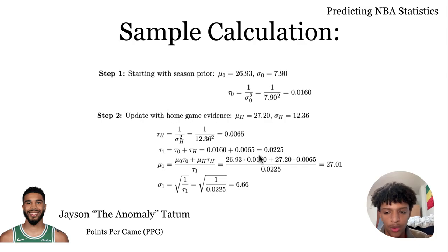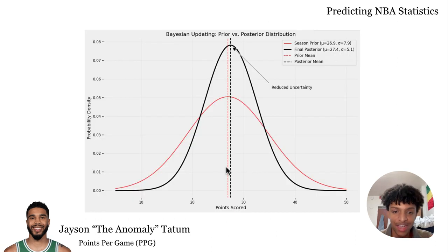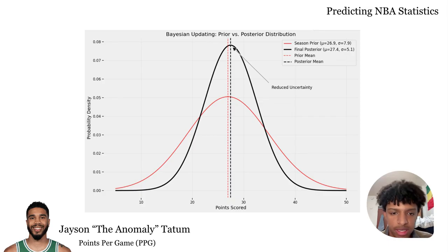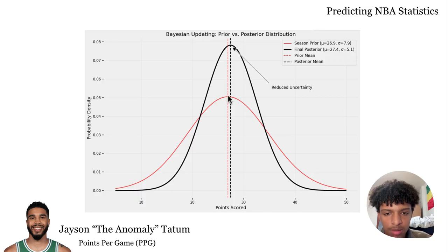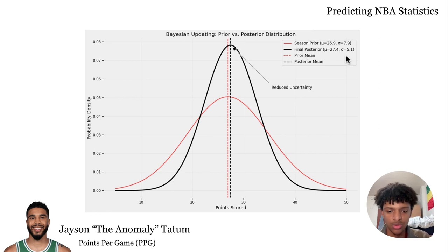I showed how I do that here: I have my prior, I calculate the precision of my prior, then I calculate the precision of the likelihood function, and using the formula I can find the values for the posterior. After weighing in all the factors, I got this new distribution showing his updated probability based on what my model thinks. At first, the season prior had a mean of 26.9 and standard deviation of 7.9. But now after the updating, the posterior has a mean of 27.4. So based on the data, the model believes that Tatum will do better than normal this season, and the standard deviation is lower, giving an even more precise value.